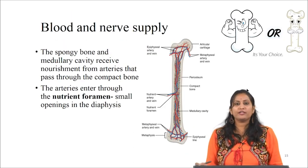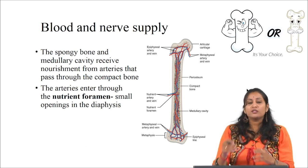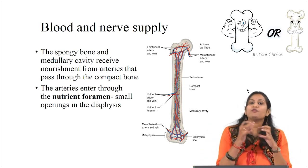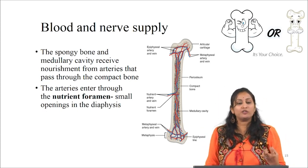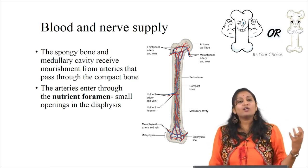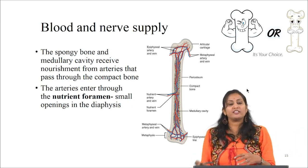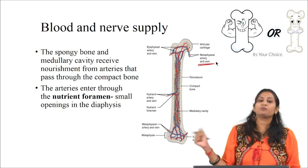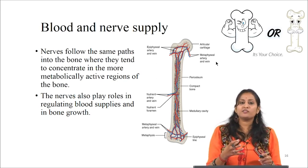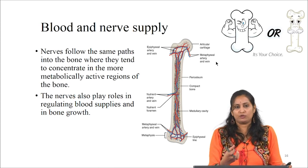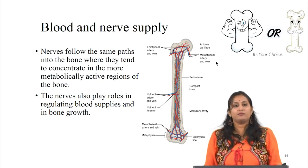Regarding blood and nerve supply to bone: the spongy bone and medullary cavity receive nourishment from arteries that pass through the compact bone. Arteries enter through the nutrient foramen, which is a small opening present in the diaphysis. Osteocytes in the spongy bone get nourished by blood vessels that enter through the periosteum and into the marrow cavities. Once passing through the marrow cavities, blood is collected by veins and passes out of the bone. Nerves follow the same path and tend to concentrate in more metabolically active regions, also sensing pain and regulating blood supply and bone growth.